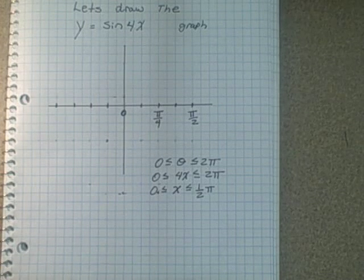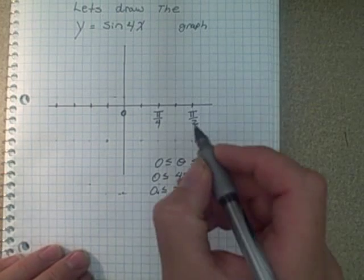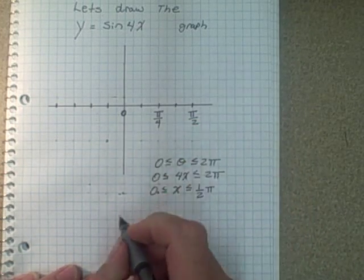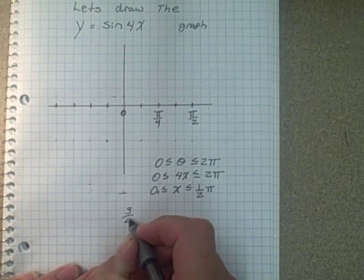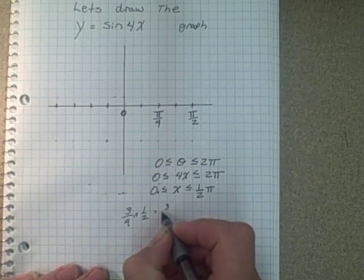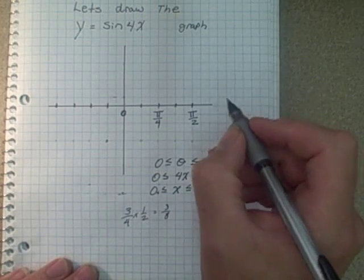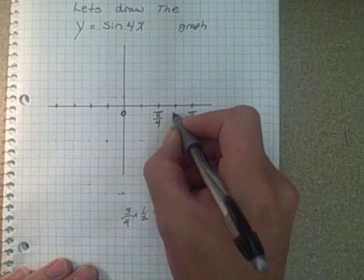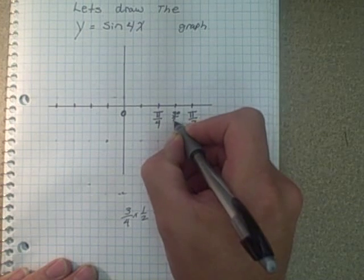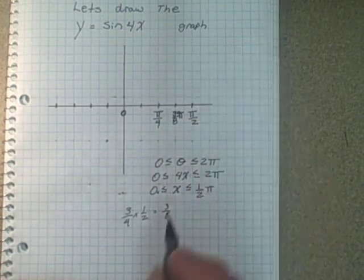So that would be 3 quarters divided by pi divided by 2. So 3 quarters divided by 2. That would be 3 eighths pi.